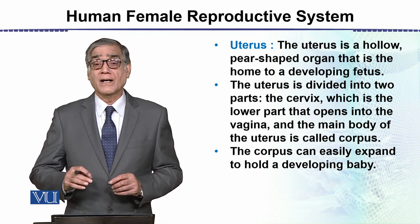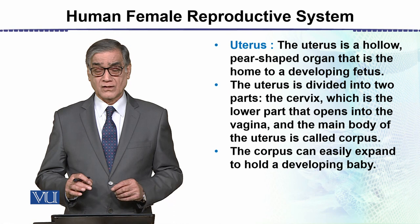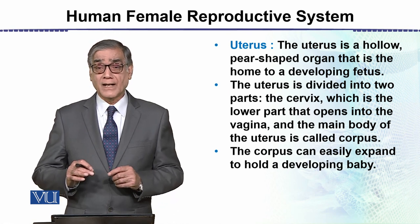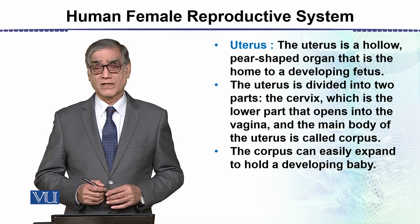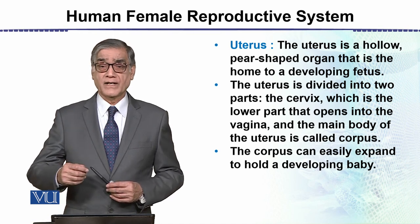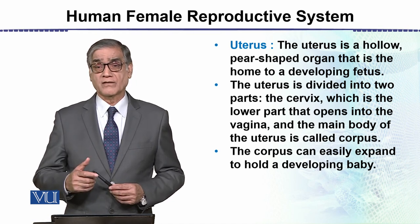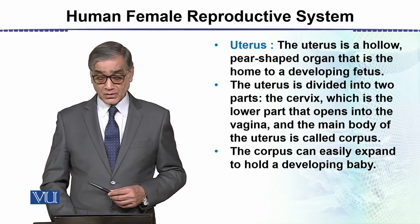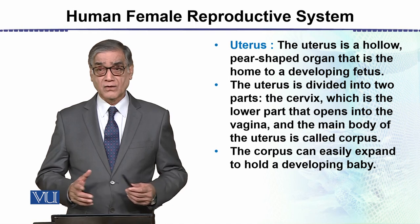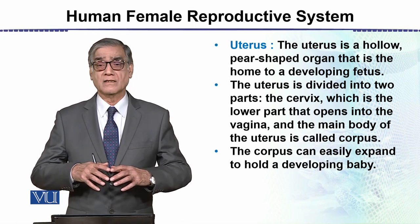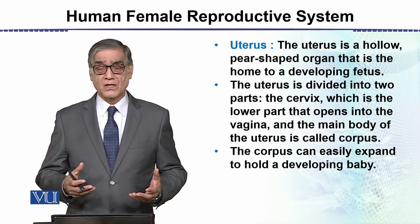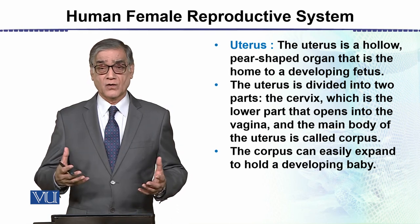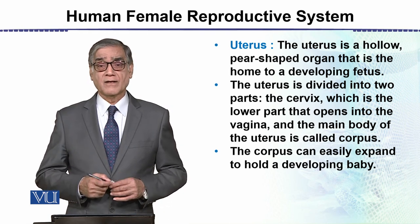The fertilized egg, also called the zygote, readily implants itself in the uterine wall — and that is the point which marks the beginning of pregnancy. The corpus of the uterus can easily expand to accommodate the developing child.